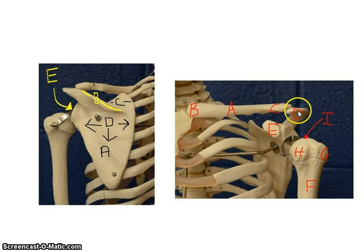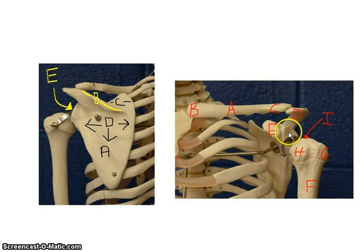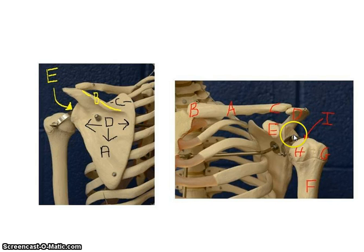Here you see the scapula and the acromion process. Below the clavicle is the coracoid process — if you feel on the lateral side of your clavicle you can actually find it on yourself. One more structure on the scapula is the glenoid cavity, where the head of the humerus articulates. It's not a very deep cavity, which is why the shoulder is very mobile but also not very stable — the lack of depth in the glenoid cavity means it's not a very strong attachment between the humerus and the scapula.